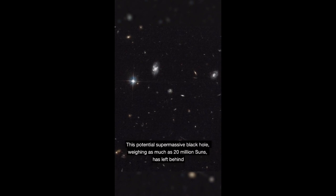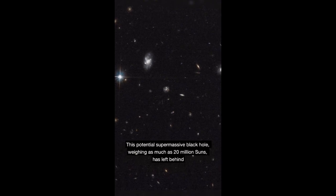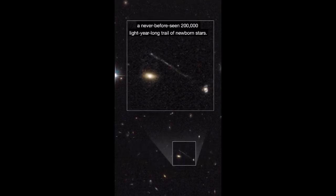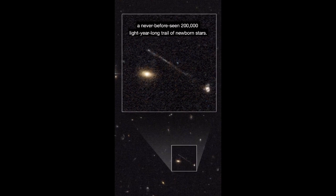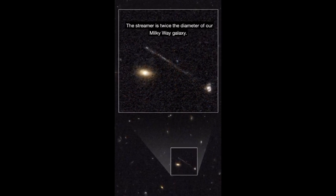This potential supermassive black hole, weighing as much as 20 million suns, has left behind a never-before-seen 200,000 light-year-long trail of newborn stars. The streamer is twice the diameter of our Milky Way galaxy.